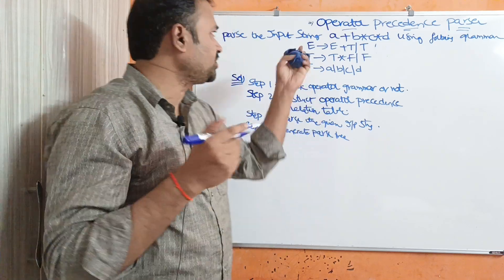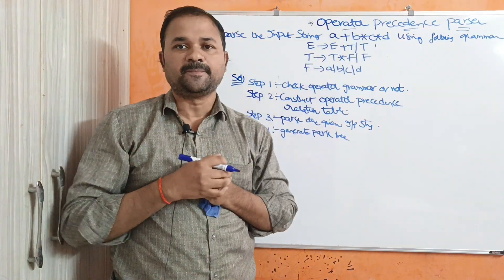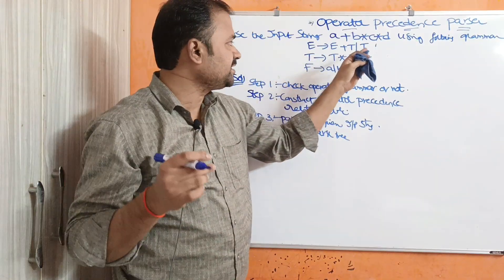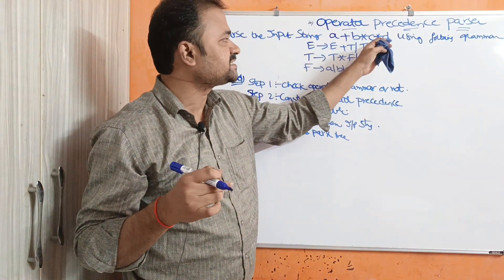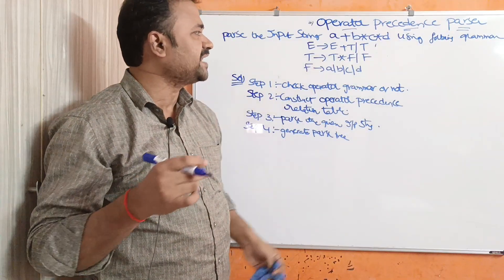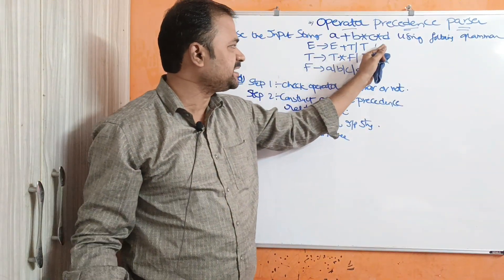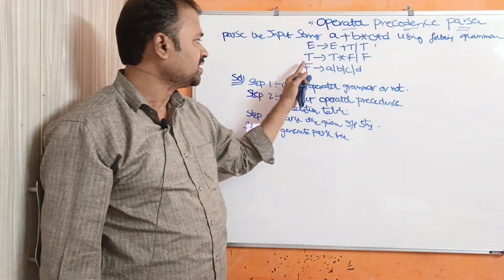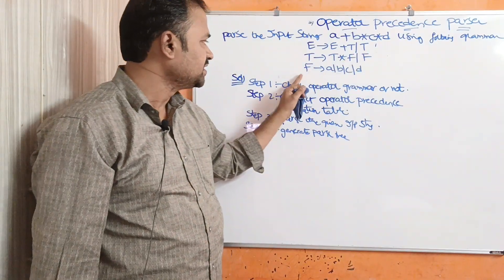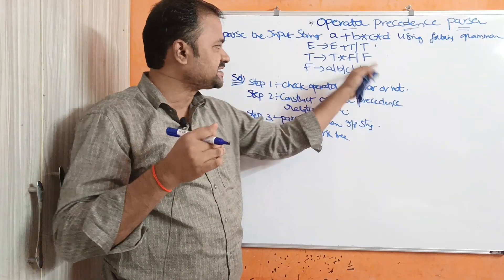Let us see about operator precedence parser. Parse the input string A plus B star C star D using the following grammar: E produces E plus T or T; T produces T star F or F; F produces A or B or C or D.